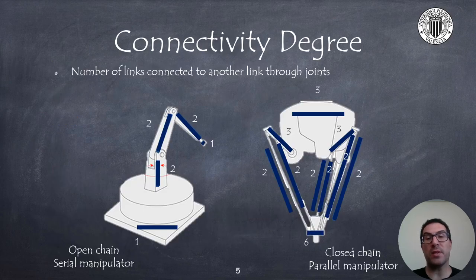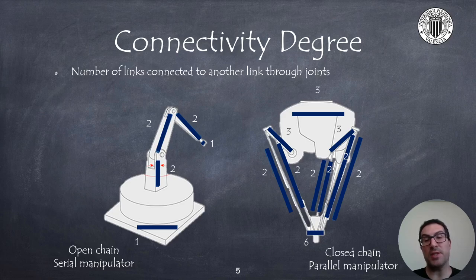The degree of connectivity of a link defines the robot structure type, and can be computed from the number of links to which it is connected through a joint. In the figures we can see two robots: one with an open chain and another with a closed parallel chain. In the serial open chain, all links have degree of connectivity 2 except the base and end effector which have degree 1. In the parallel robot, the important thing is that links have degrees of connectivity 2 or 3, and the end effector has a degree of connectivity of 6.